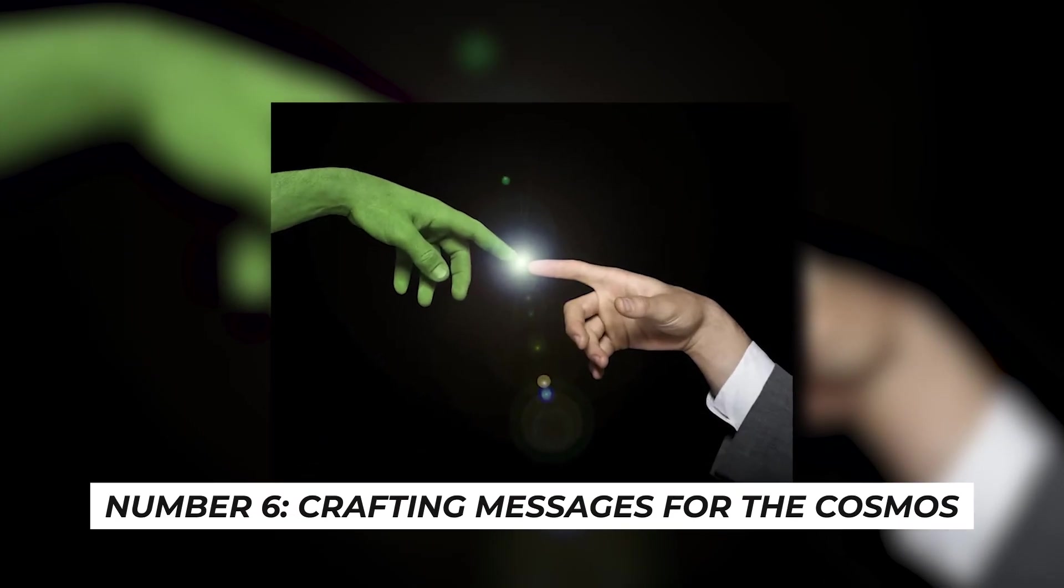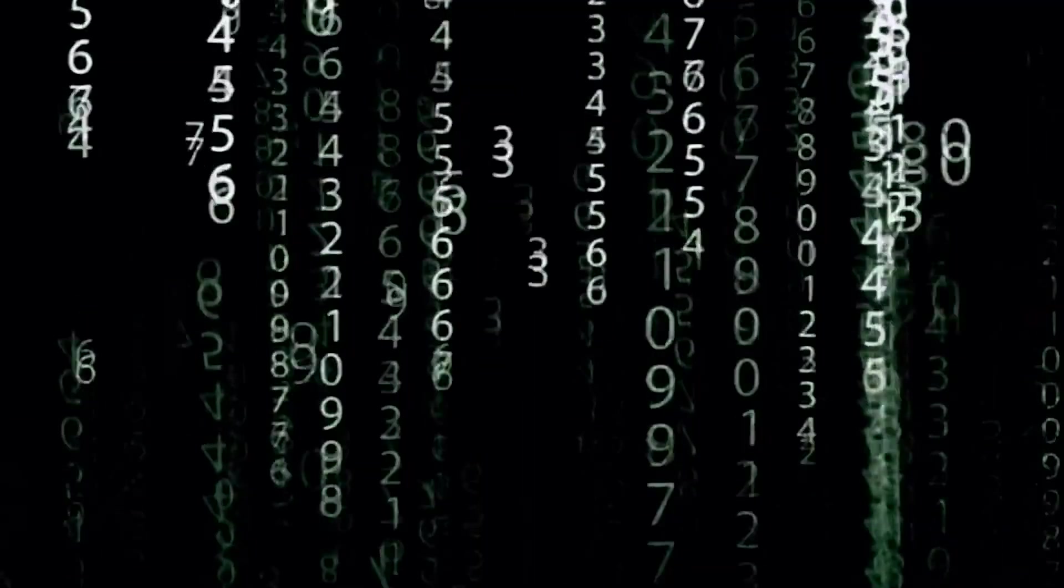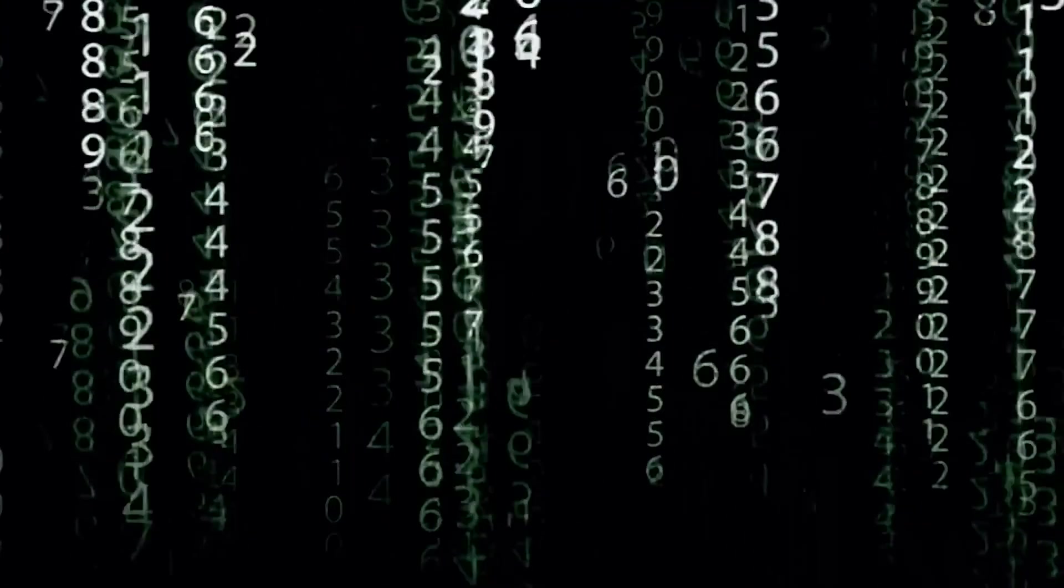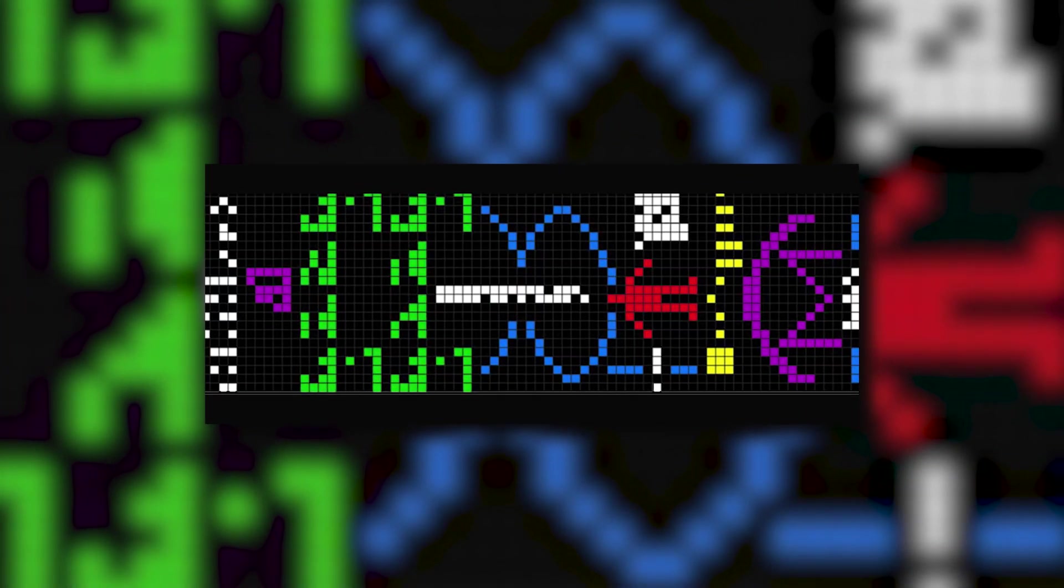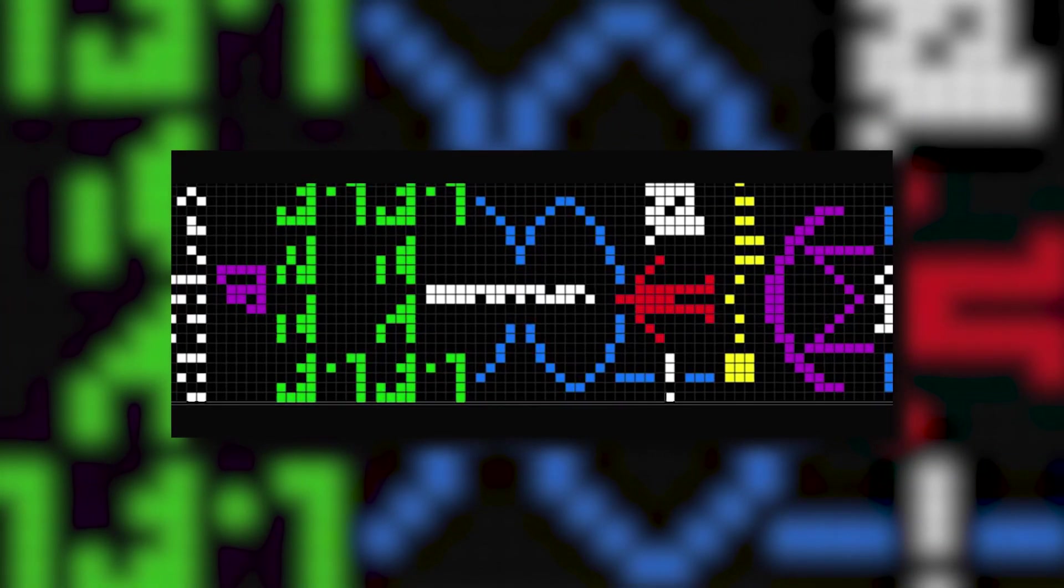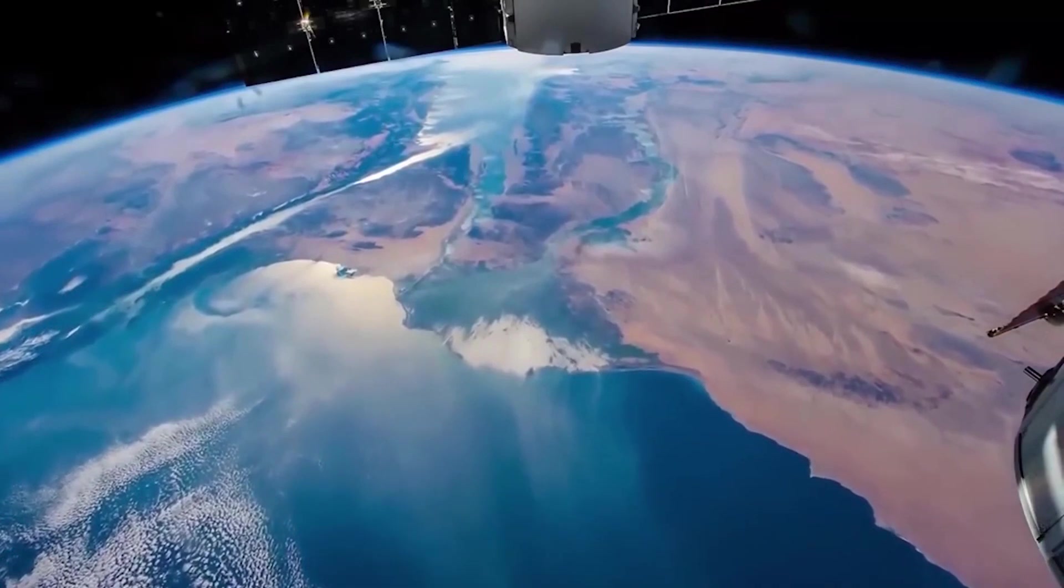Number six: Crafting messages for the cosmos. People have been dreaming about talking to aliens for a long time. Back in 1974, we sent a special message called the Arecibo Message to faraway star groups. This message was like saying, 'Hey, we're here and here's who we are.'